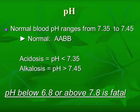For purposes of this lecture, normal is going to be abbreviated as AABB, meaning there is a balance between acid, A, and base, B. Acidosis is when the pH drops below 7.35, and this is usually due to an excess of hydrogen ions. Alkalosis is when the pH is over 7.45, and it's because of a deficit of ions. A pH below 6.8 or above 7.8 is fatal for the patient, as it's inconsistent with compatibility for life.